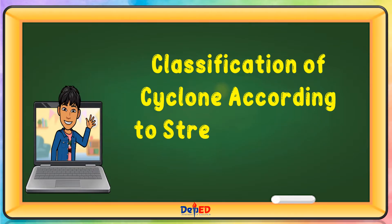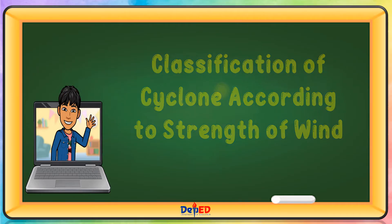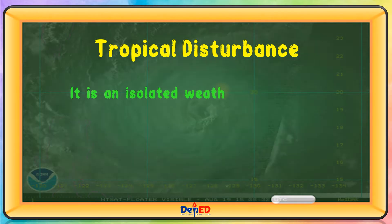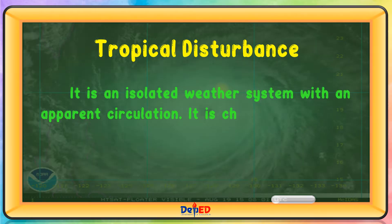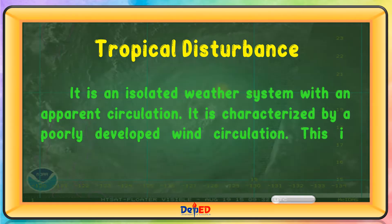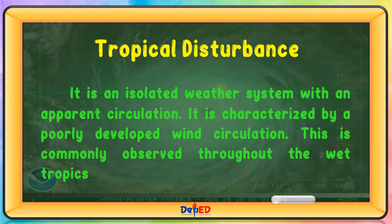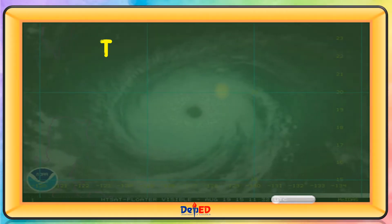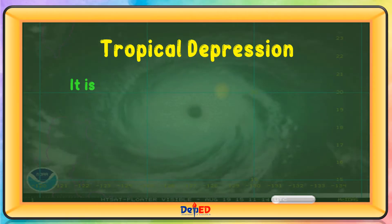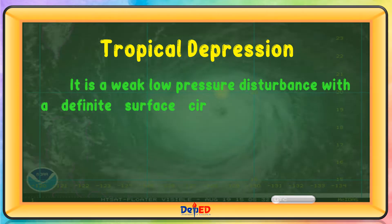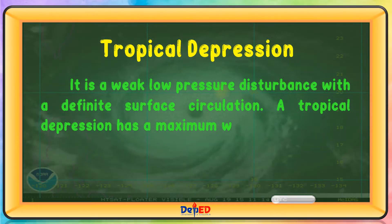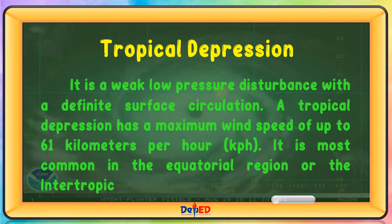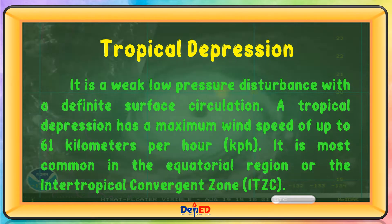Classification of cyclone according to strength of wind. Tropical disturbance. Tropical depression is a weak, low-pressure disturbance with a definite surface circulation. A tropical depression has a maximum wind speed of up to 61 kilometers per hour. It is most common in the equatorial region or the intertropical convergent zone.